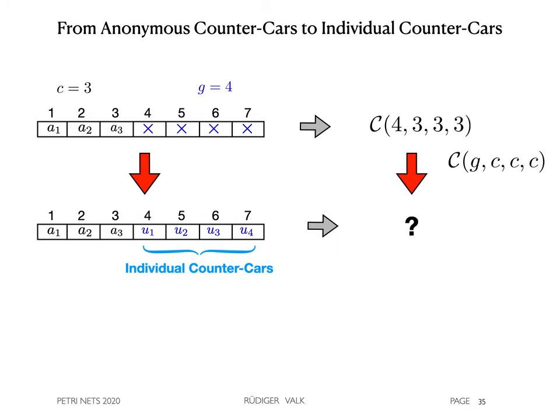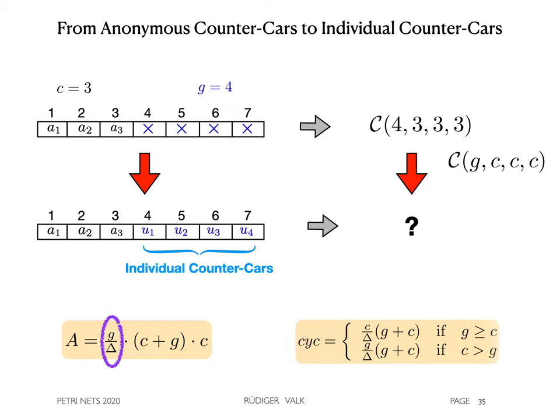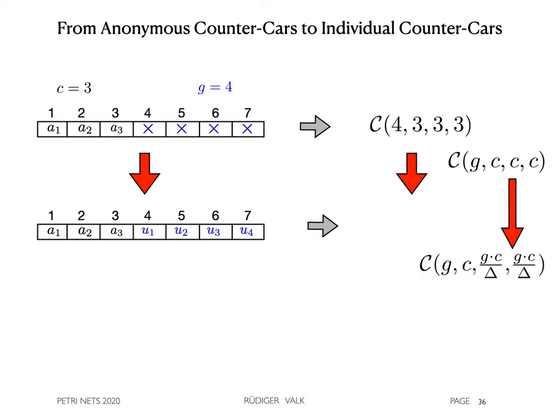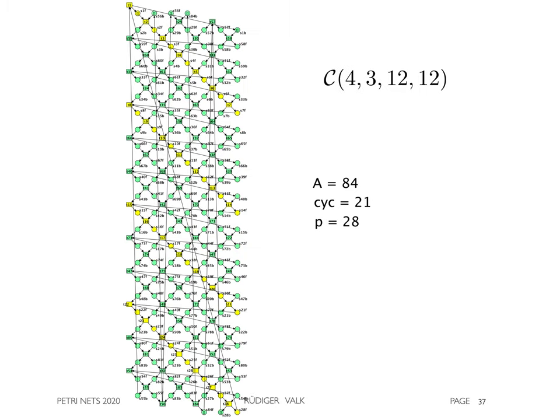By a similar construction, we solve the case of individual counter-cars. The used modifications are capital A with an additional factor G divided by delta and C by C like this formula. We obtain a result which is different for the parameters gamma and delta, namely C increased by the factor G divided by delta. In the example, this results in the cycloid 4-3-12-12. This has 84 transitions, a minimal cycle length of 21 and process length of 28.